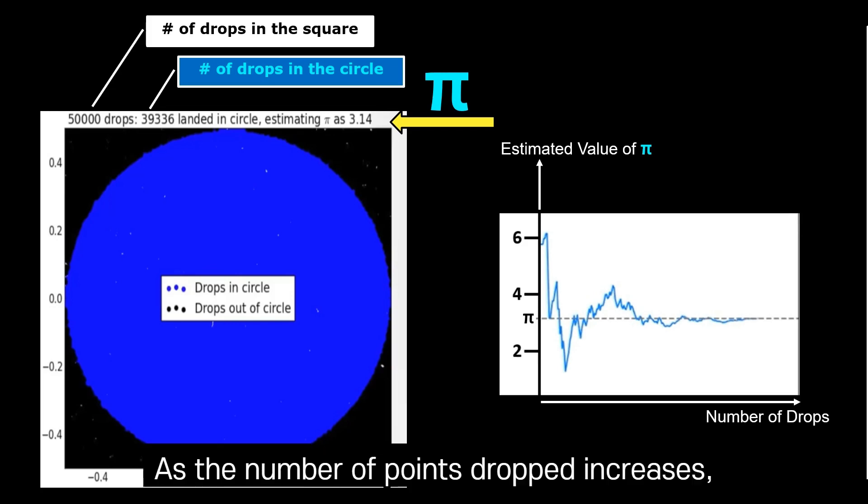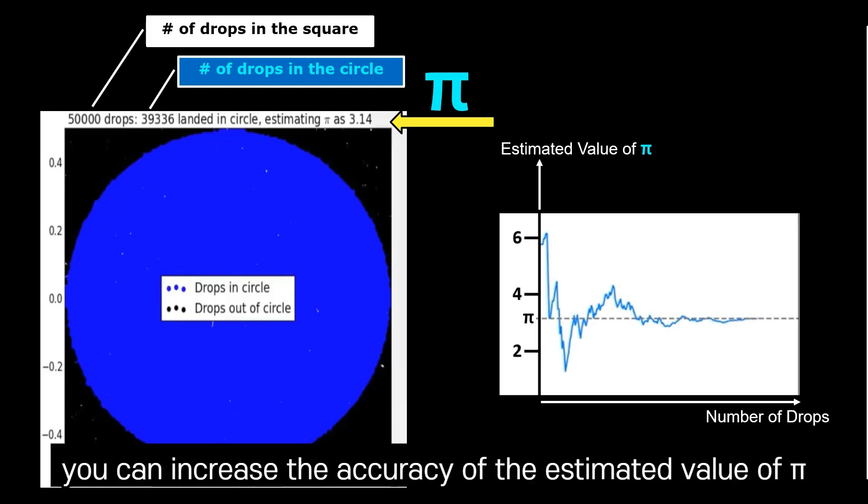As you can see, as the number of points dropped increases, you can increase the accuracy of the estimated value of pi.